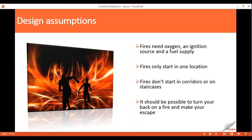In reality, we make sweeping assumptions when looking at fire safety — particularly our strategy for means of escape. Most design standards in practice today only consider a fire starting in one location initially. As the fire develops it may spread, but the initial fire we are planning our escape strategy from is considered to start in only one location. The strategy for means of escape is to be able to turn your back on the fire and make your way to an alternative exit, relying on the fact that the alternative exit isn't also obstructed by a fire.